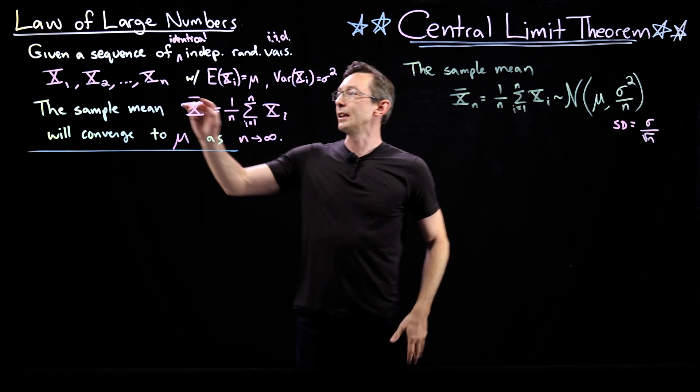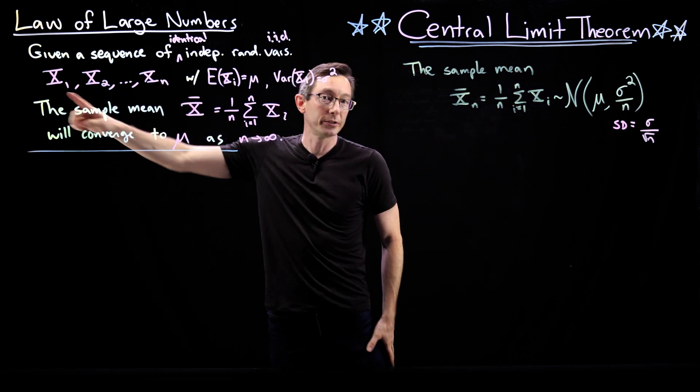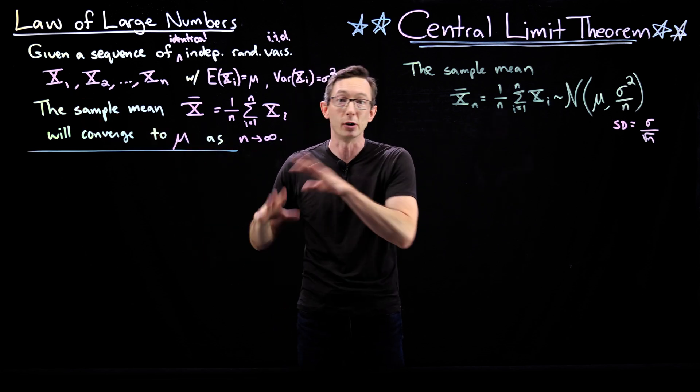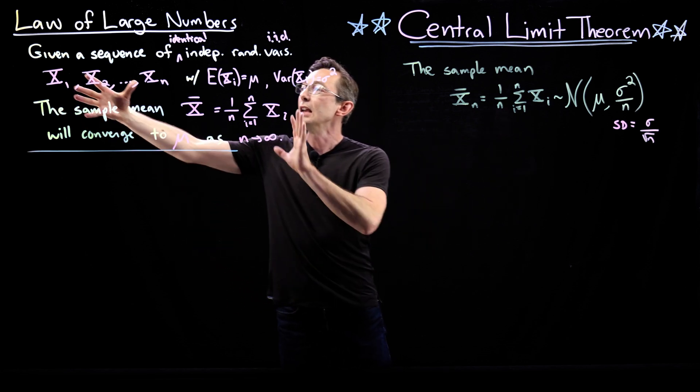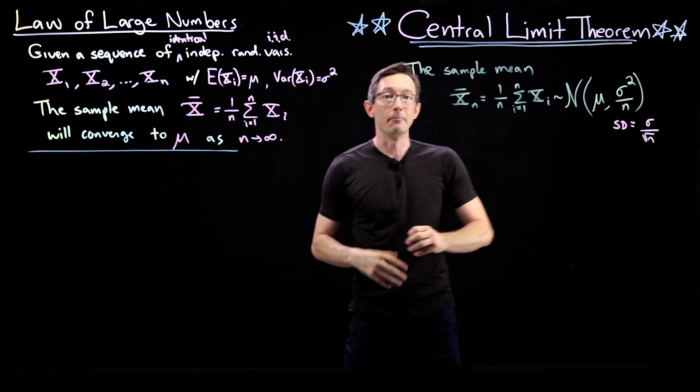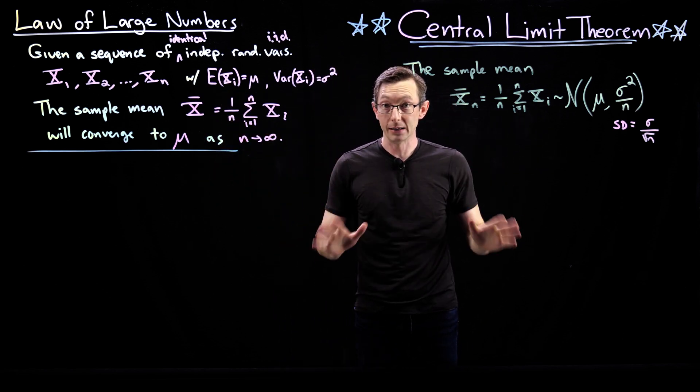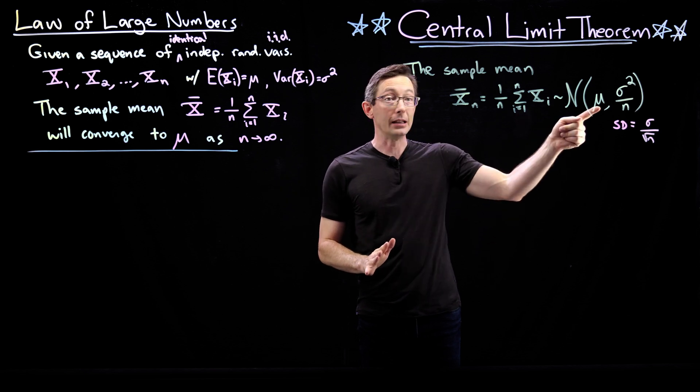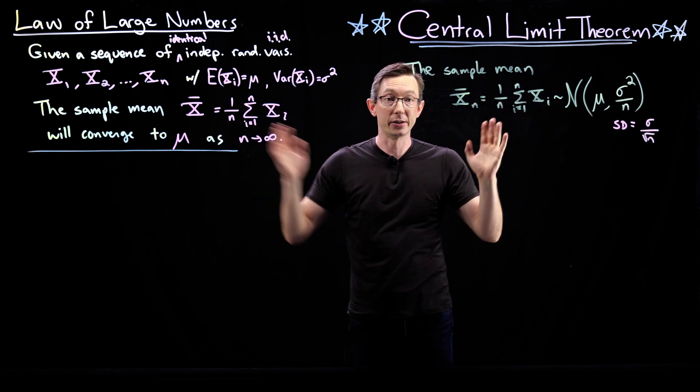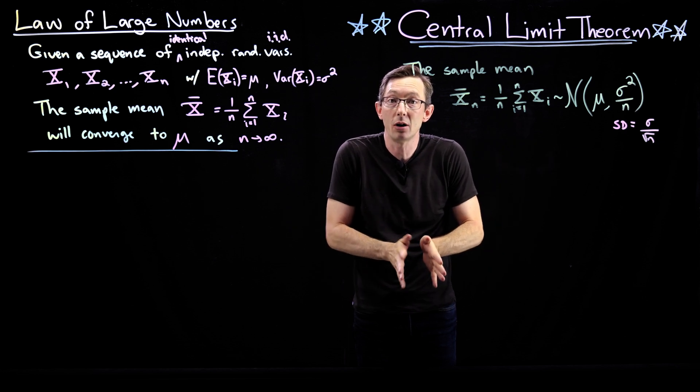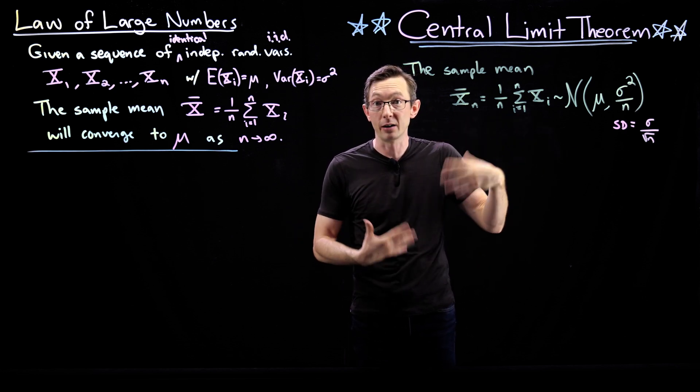And what this says is that regardless of what the actual distribution of these random variables are, maybe they're uniform, exponential, Poisson, whatever they are, if you add them up and average them, that average value starts to look like a Gaussian random variable where the mean is the actual mean of the distribution and the standard deviation gets smaller and smaller and smaller as you increase the number of experiments you do.